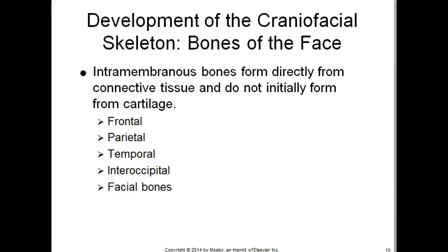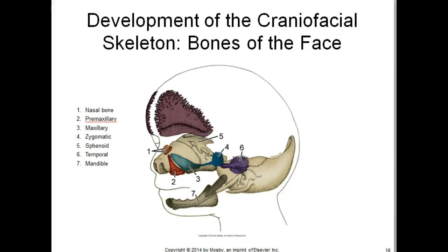Certain bones form directly from connective tissue and do not initially form from cartilage. These bones are the frontal, parietal, temporal, interoccipital, and facial bones. This image illustrates the position of the nasal, premaxillary, maxillary, zygomatic, sphenoid, temporal bones, and the mandible.